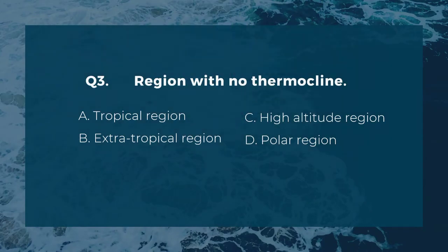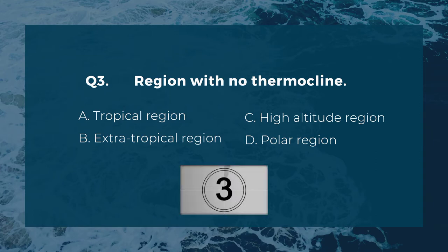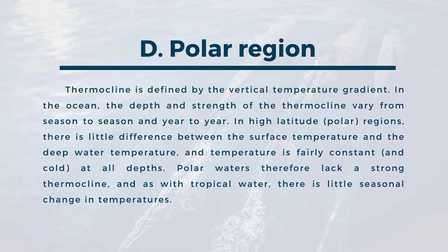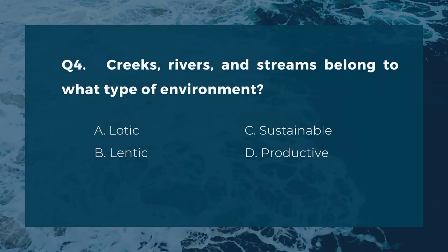Population density gives an idea of the degree of crowding or the degree of access of individuals to scarce resources such as food or space, and is often measured in terms of biomass. Question three: region with no thermocline. A) tropical region, B) extra-tropical region, C) high altitude region, D) polar region. The correct answer is D, polar region. Thermocline is defined by the vertical temperature gradient in the ocean; its depth and strength vary from season to season and year to year.